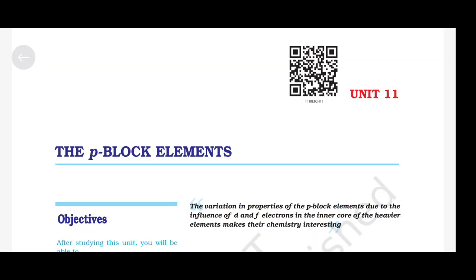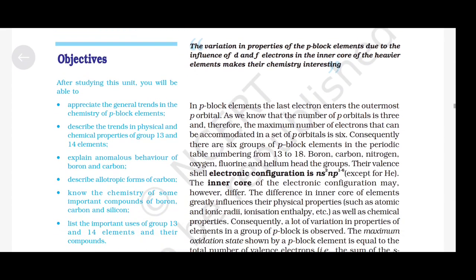The P-Block Elements. The variation in properties of the P-Block Elements due to the influence of D and F electrons in the inner core of the heavier elements makes their chemistry interesting. In P-Block Elements, the last electron enters the outermost P orbital. The number of P orbitals is 3, and therefore the maximum number of electrons that can be accommodated in a set of P orbitals is 6. Consequently, there are 6 groups of P-Block Elements.